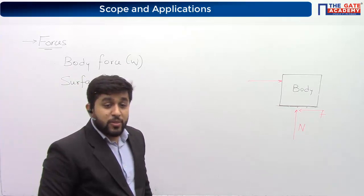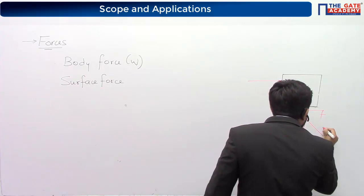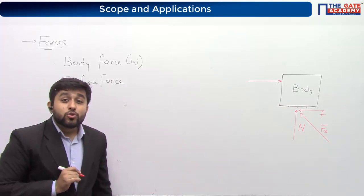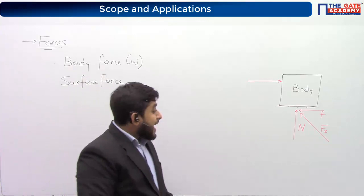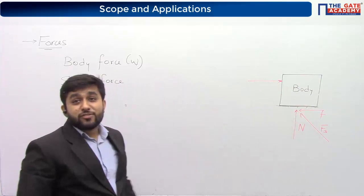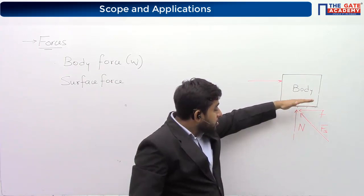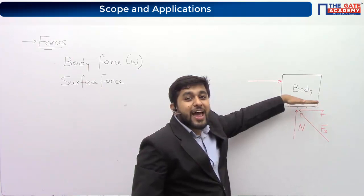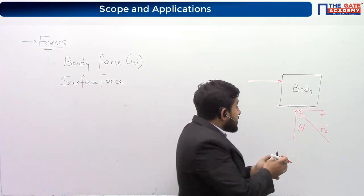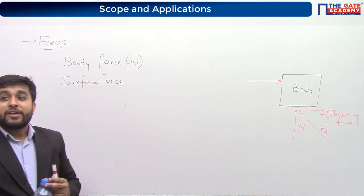The total resultant surface force applied by the ground on the body is the vector sum - under root of N squared plus F squared. The normal force acts perpendicular to the surface while the friction (shear) force acts parallel to the surface. These are different: body forces act throughout the entire volume, while surface forces act only on the surface of the body.